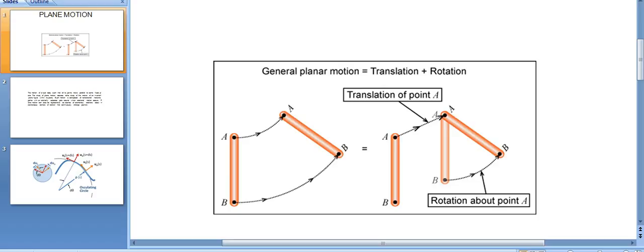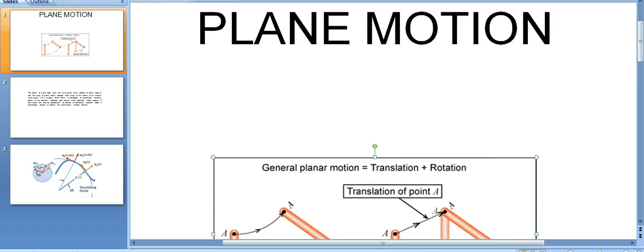And also the rotation about point A, this is A to A and B to B. This is the translation and this is the rotation of the body. The sum of these translation and rotation is called the plane motion.